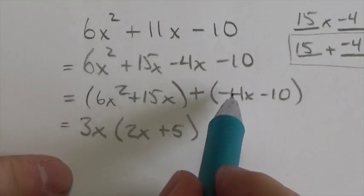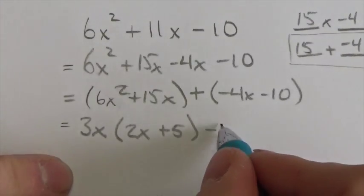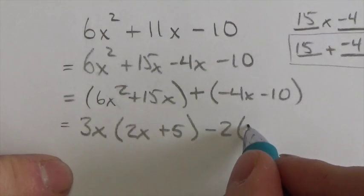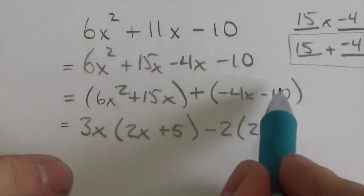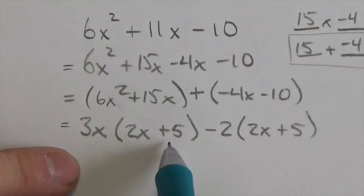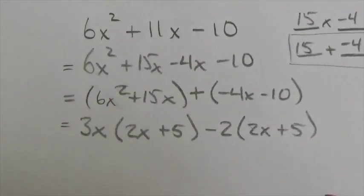Here, what's common to these two terms? Well, clearly the negative and a 2. And when I divide negative 4x by negative 2, I will get positive 2x. Negative 10 divided by negative 2 will be positive 5. And now, notice that that binomial 2x plus 5 is common.